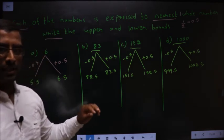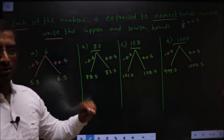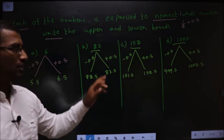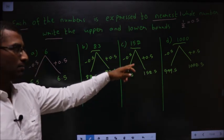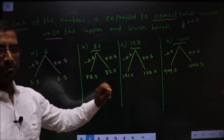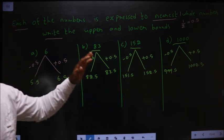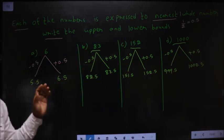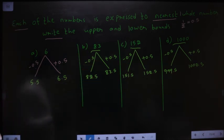So whenever it is nearest to a whole number, we should add plus 0.5 and minus 0.5. Are these examples clear?